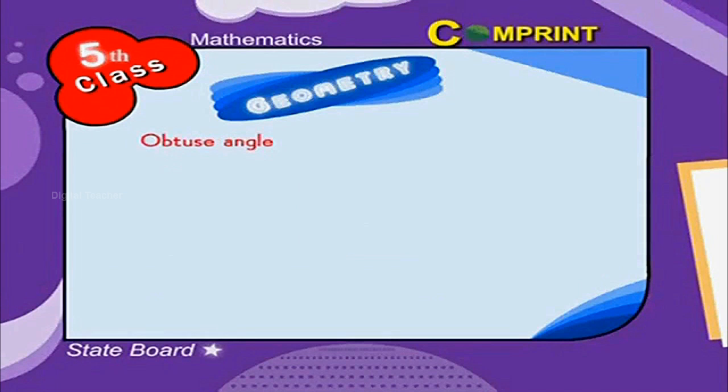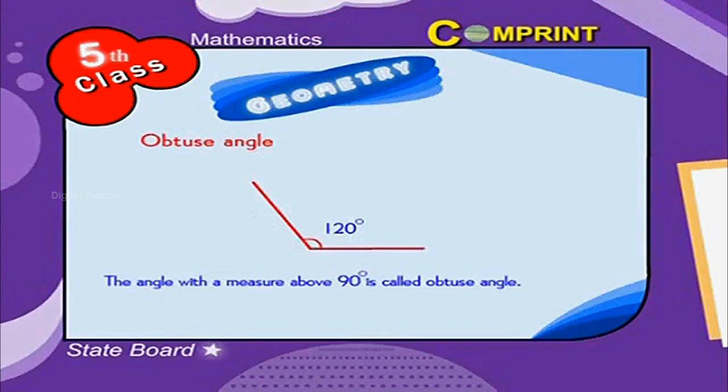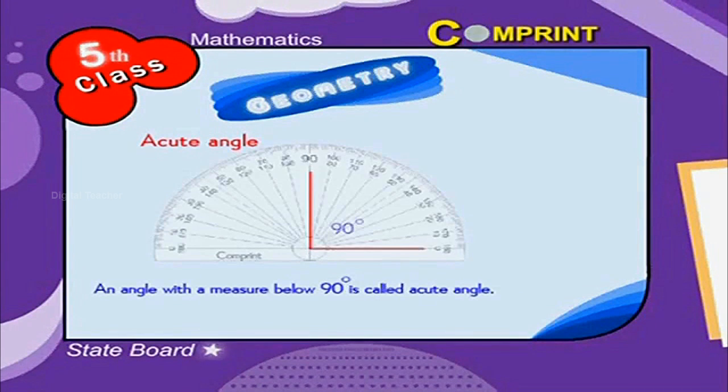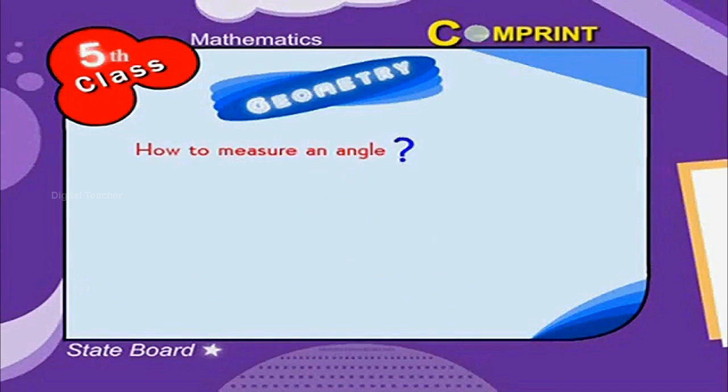Obtuse Angle: The angle with a measure above 90 degrees is called Obtuse Angle. Acute Angle: An angle with a measure below 90 degrees is called Acute Angle. How to measure an angle?